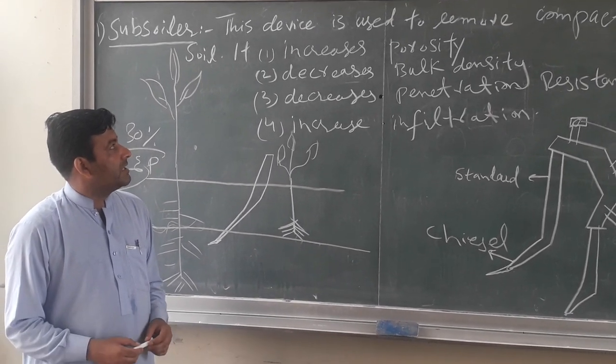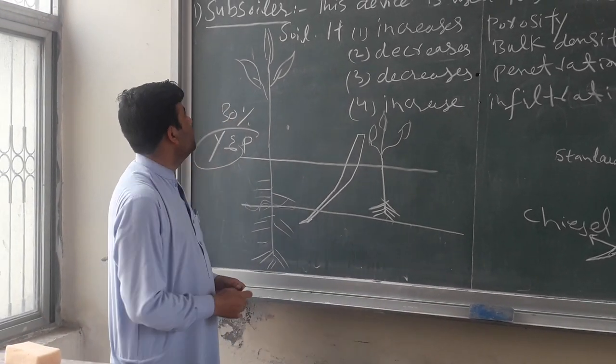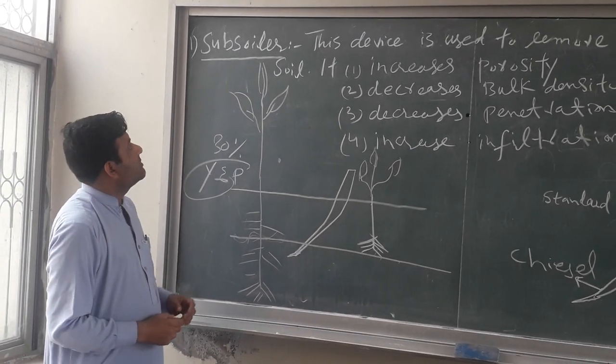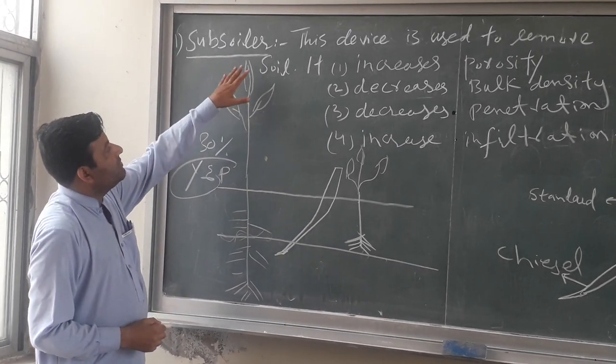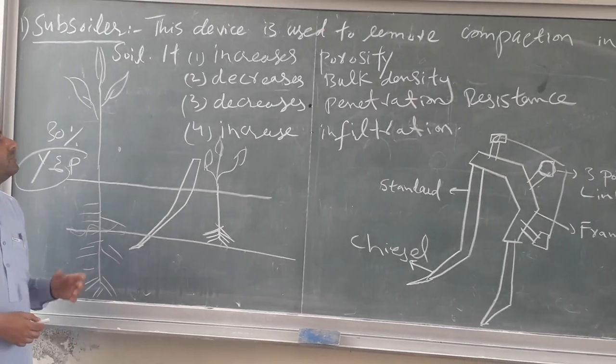Bismillahirrahmanirrahim. Today is our class on primary tillage implements, and in primary tillage implements we will study about subsoiler. So subsoiler is a primary tillage tool which is used to remove compaction from the soil.